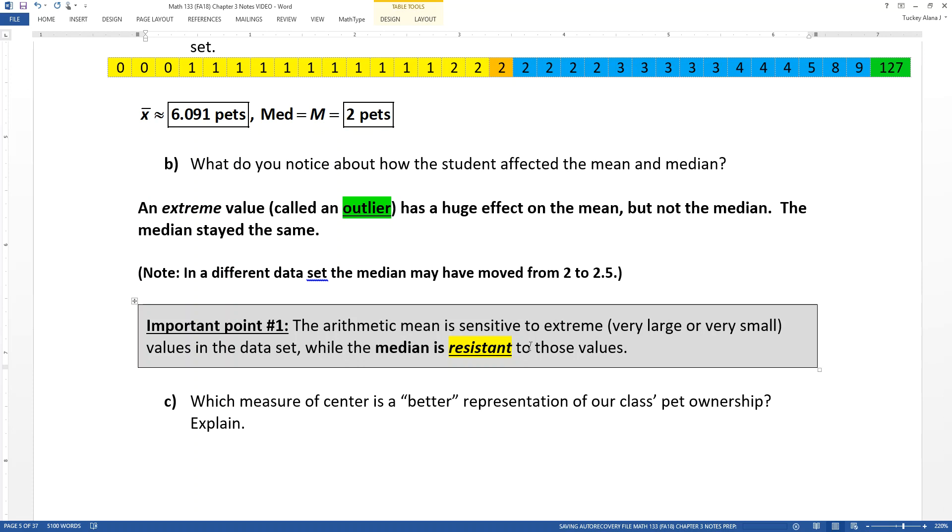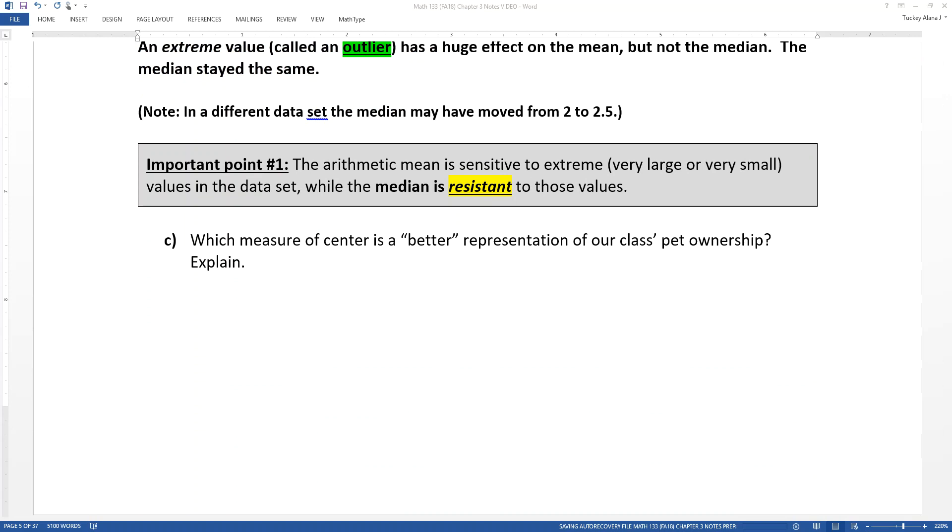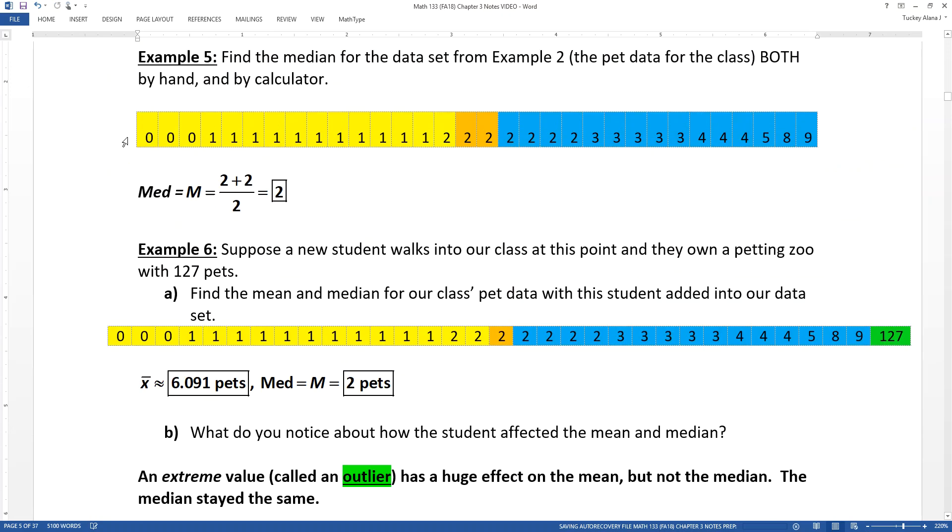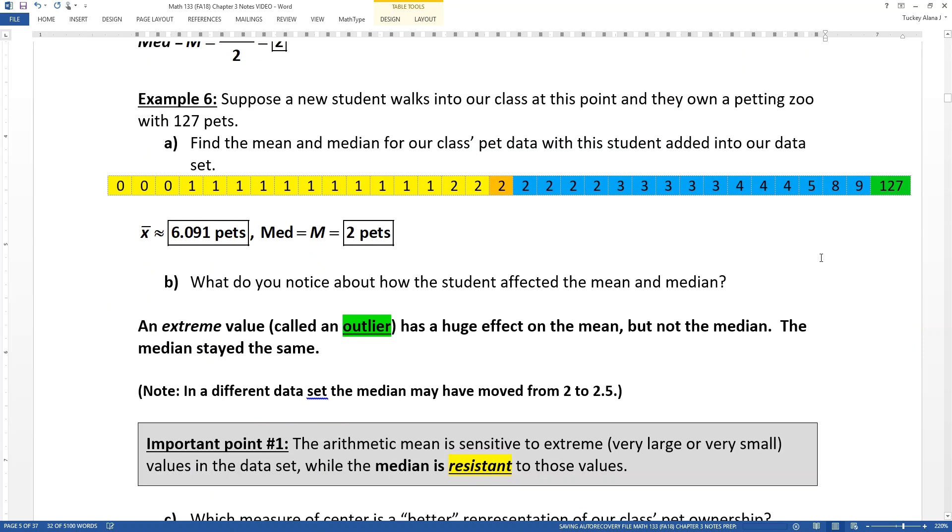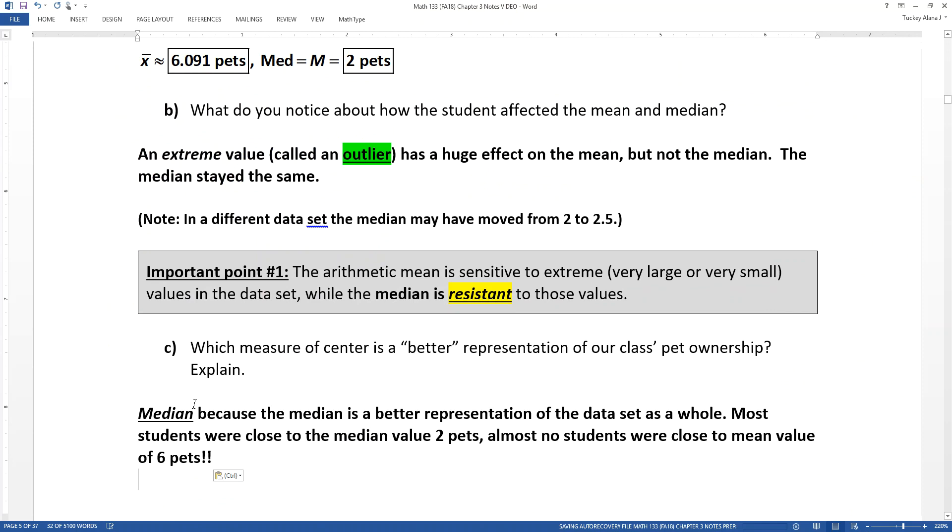When you get really weird numbers in the data set, the median doesn't get pulled around the way the mean does. So that means that when you have a data set that has an extreme value, which is the better measure of center? Which is the one that would be a better representation of the class? Well, when there's no extreme value, the mean and the median, they're both pretty good. Mean's probably a little bit better. But when there's an extreme value, like the 127, then the median is way better because the median resists that pull of the extreme value, unlike the mean, which gets yanked around.